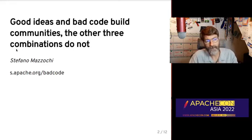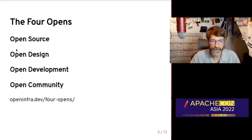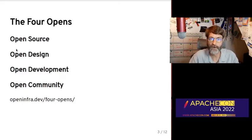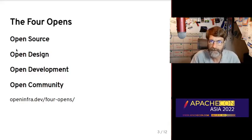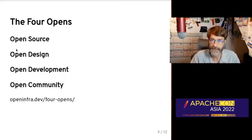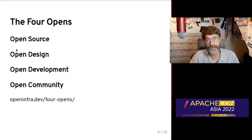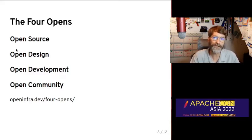Before I get into some of these tips, I want to share another idea around open source communities. This is from the Open Infrastructure Foundation, and they codify this as the Four Opens — the four pillars of an open source project. The first one is the minimal that defines open source: that it is under an open source license. The OSI, the Open Source Initiative, defines what licenses are acceptable as open source licenses, and if you release a project under one of those licenses, it is by definition open source.